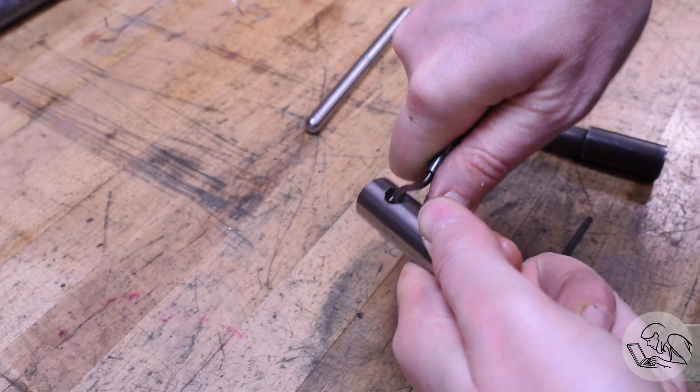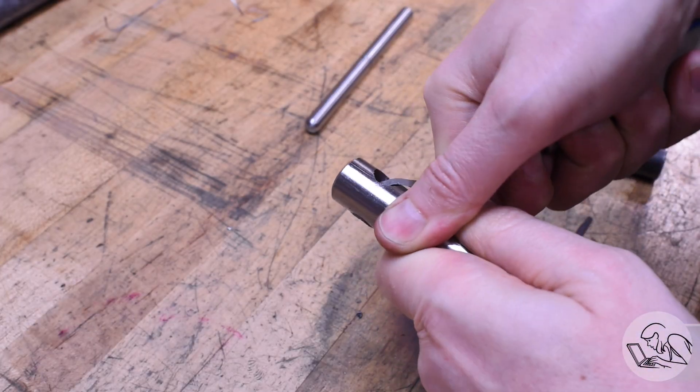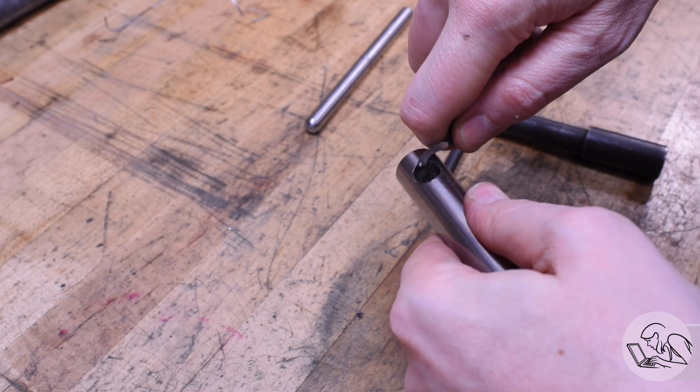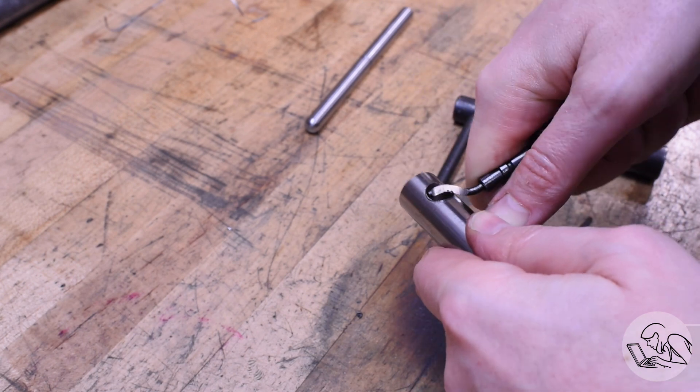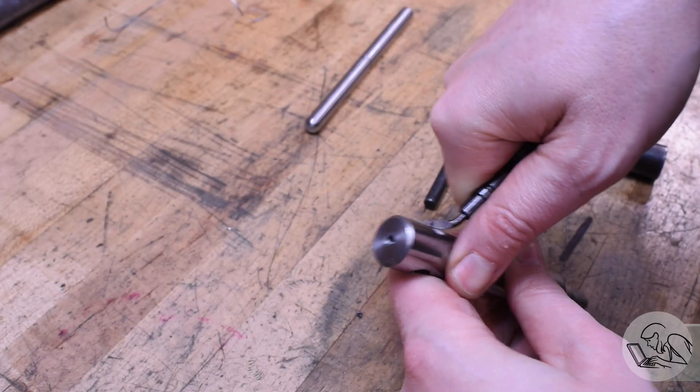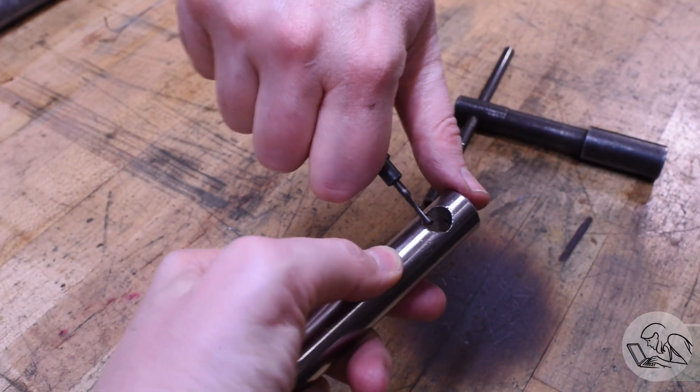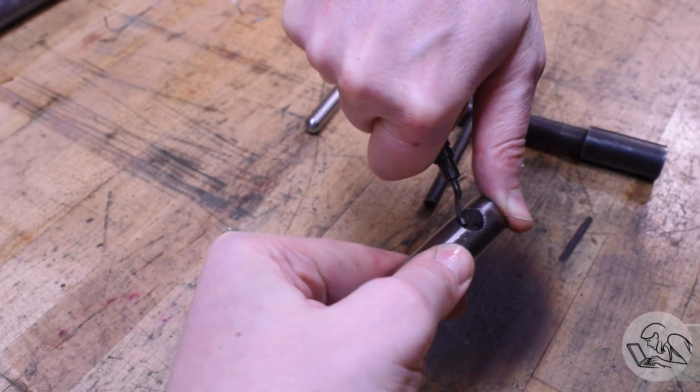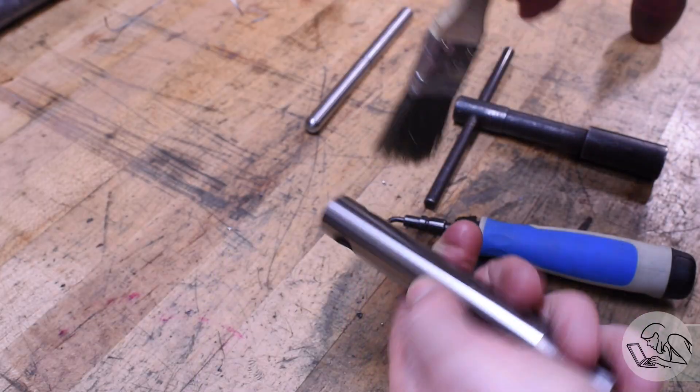Deburring is something that occasionally affects order of operations, though I wouldn't say it's common. An occasional challenge with deburring is getting access to the edge that you need to deburr, for example, the backside of a small hole. So that may dictate how and when you do certain features because you know you're going to need to get a carbide blade in there or something.